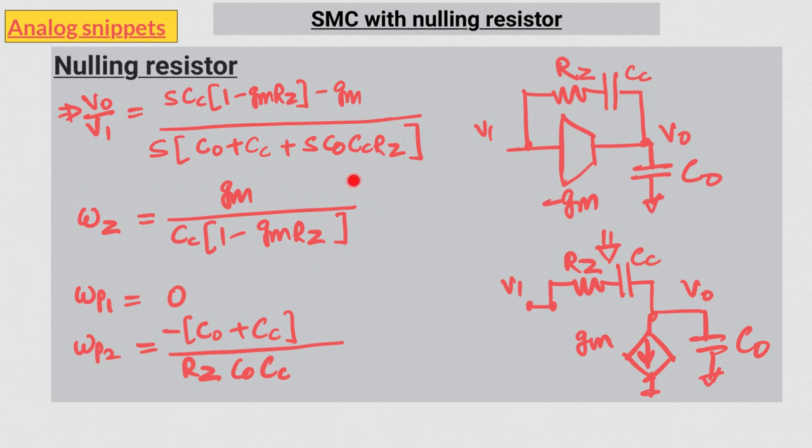Looking at the zero frequency, if gmRZ equals one, then this frequency moves to infinity, which is the same as saying that the zero has been removed.